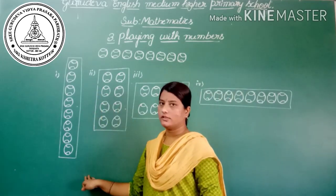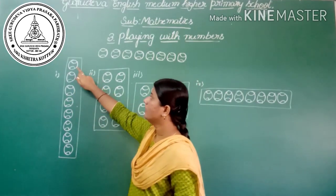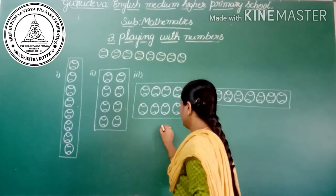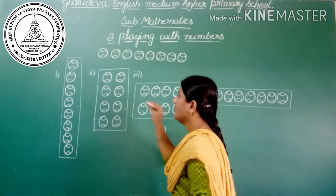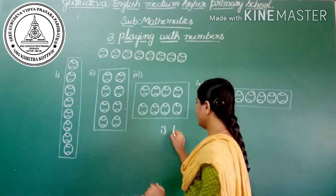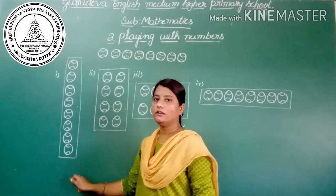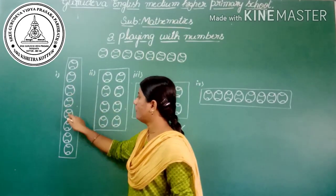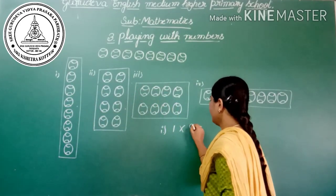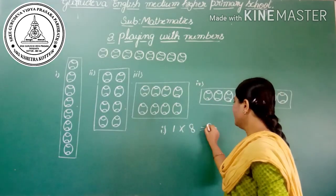In the first arrangement, in each row there is 1 ball. I will write it as 1 into — how many rows are there? Let's count: 1, 2, 3, 4, 5, 6, 7, 8. There are 8 rows, which is equal to 8.